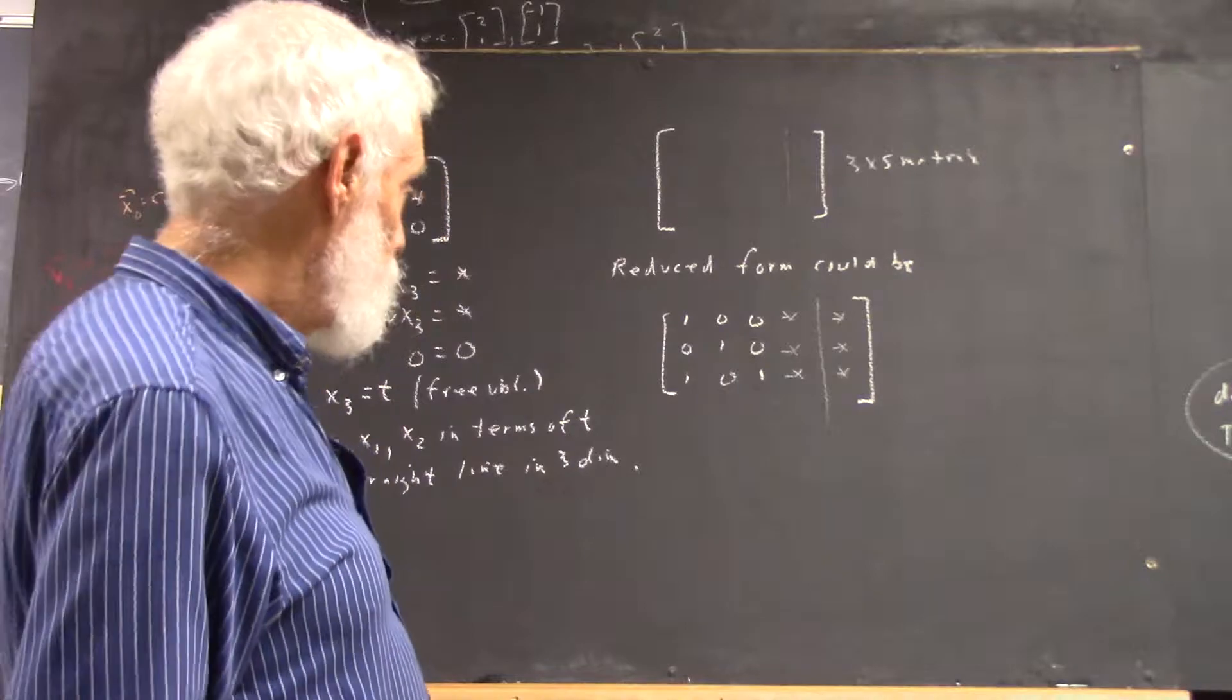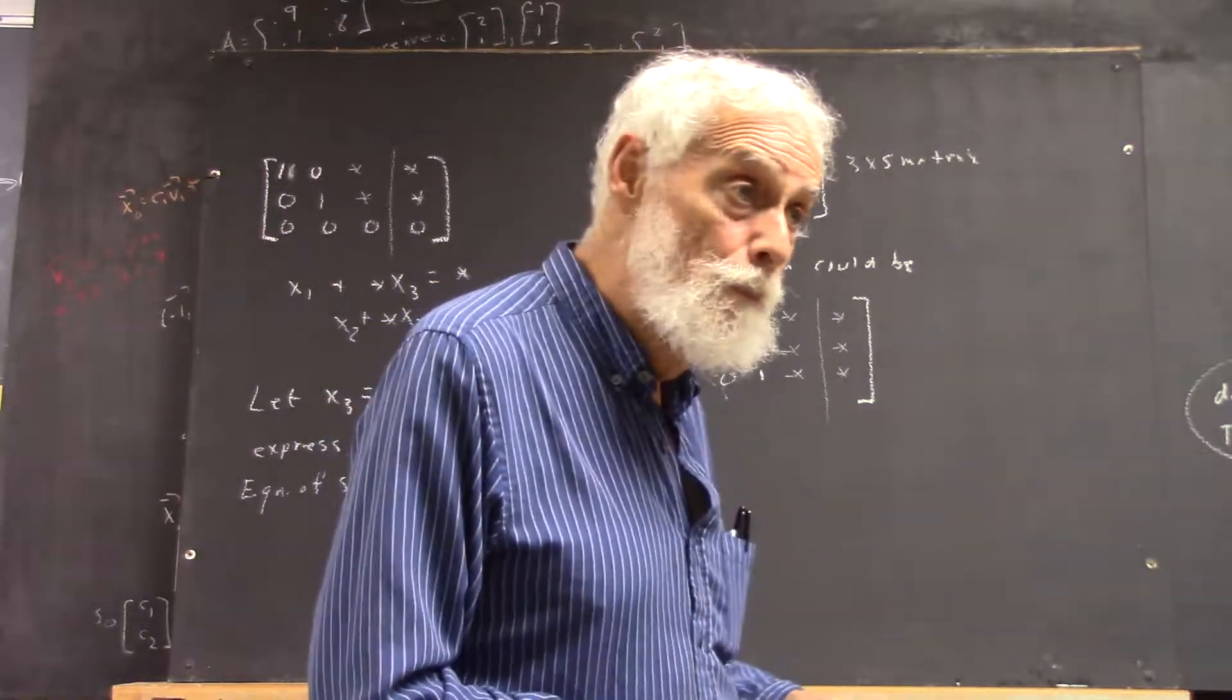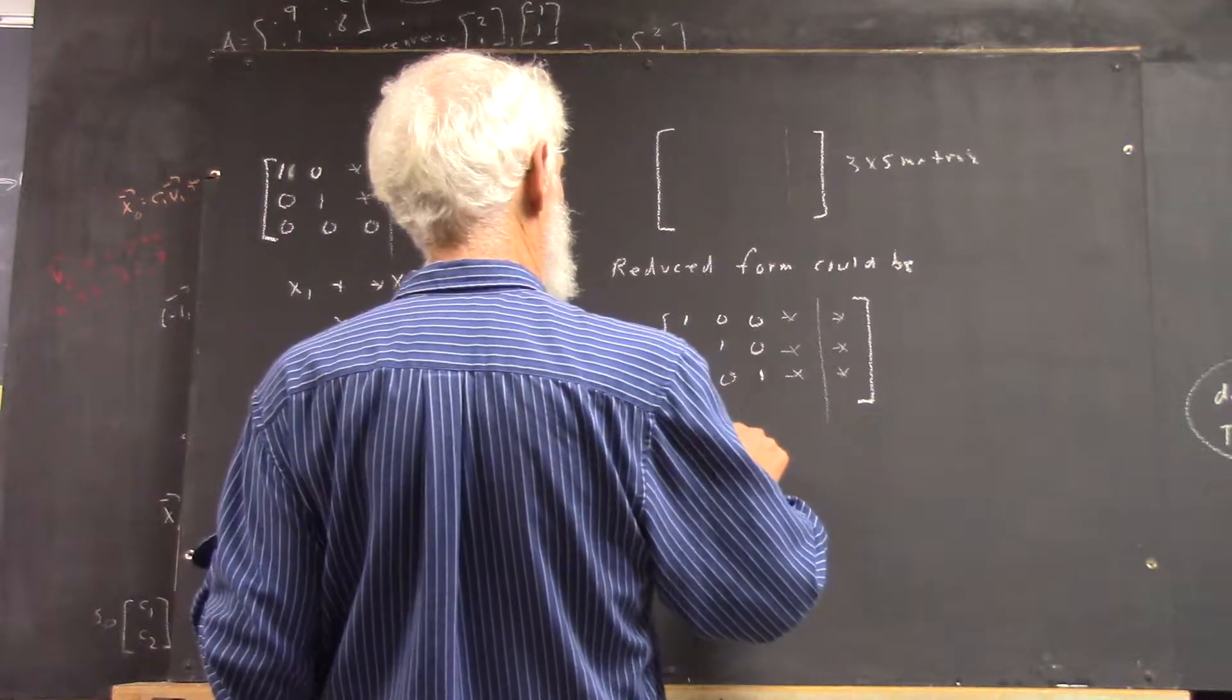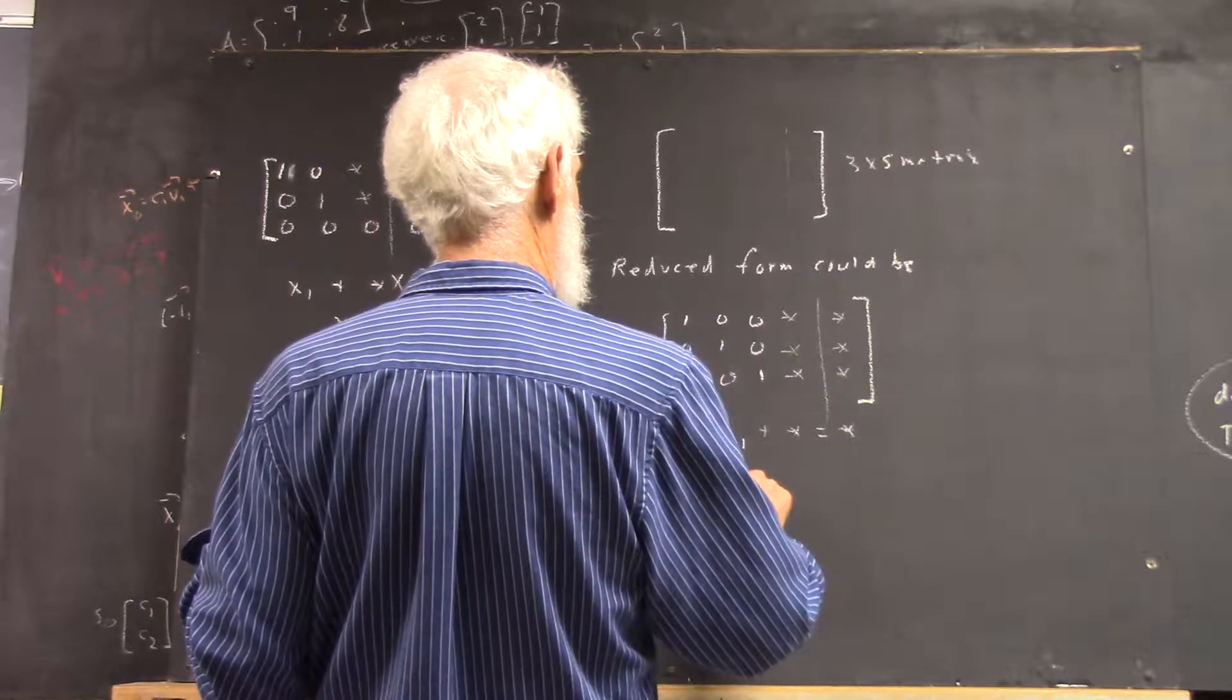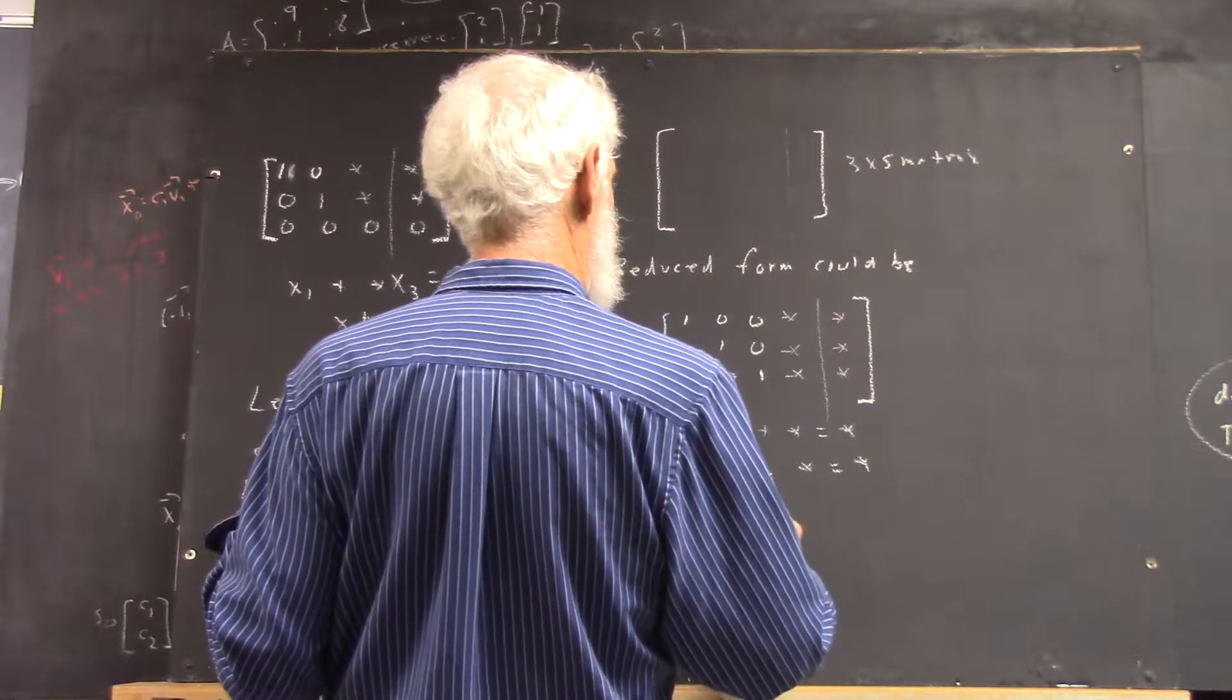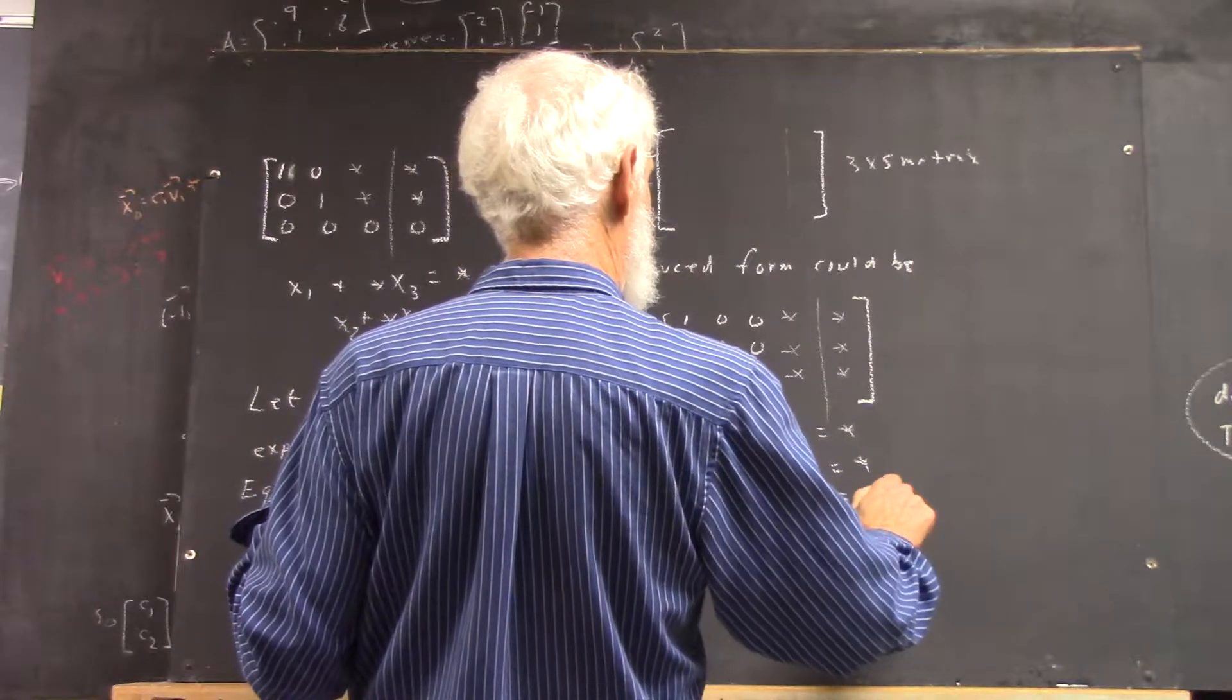Okay, well, in this case, if your variables are x1, x2, x3, and x4, this tells you that x1 plus one of these numbers equals some other number. x2 plus some number equals some other number. x3 plus some other number equals some other number, right?